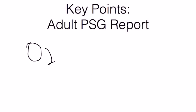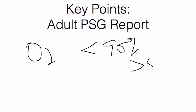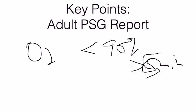The next thing to note is oxygen saturation. If the patient has less than 90% oxygen saturation for more than 5 minutes of the study, that qualifies as hypoxemia during the sleep study. If it's related to breathing or obstructive events during sleep, it should resolve when the patient is titrated with CPAP. However, if the patient still has persistent hypoxemia during the titration portion, further evaluation for pulmonary or cardiac disease is required.